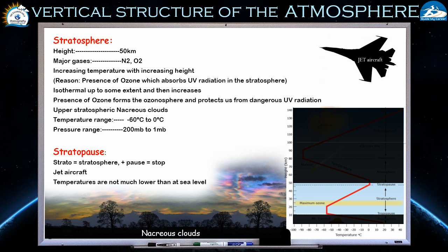The reason for this temperature increase is the presence of ozone in this particular layer. Ozone is a gas made by the combination of three oxygen atoms. What it actually does is absorb the highly dangerous ultraviolet radiation, protecting us from that dangerous UV radiation before it falls on the ground. If you look at the temperature profile, it follows an isothermal trend up to some extent and then starts increasing with height.